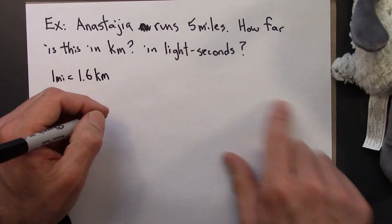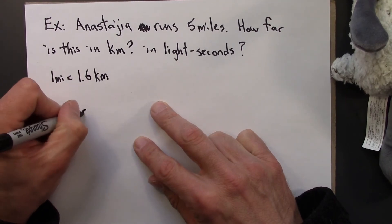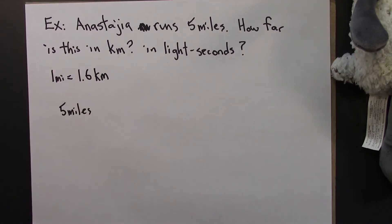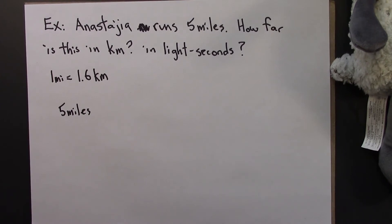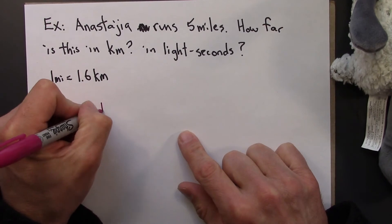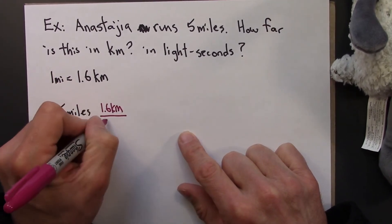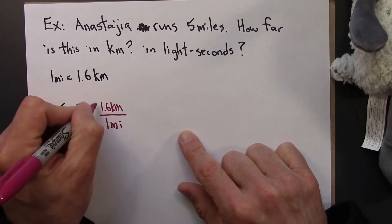Okay. So we're going to start with 5 miles. 5 miles. And then I'm going to use this conversion factor as follows. I'm going to say 1.6 kilometers is 1 mile.